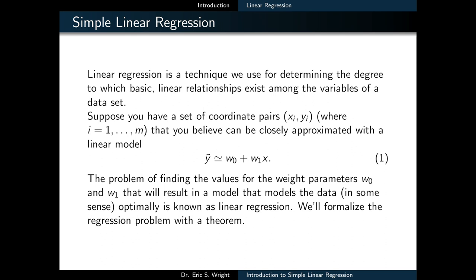Suppose you have a set of m-coordinate pairs, x sub i and y sub i, that you believe to be closely approximated with a linear model. In this model, x represents the input variable, y represents the output predicted variable, and w0 and w1 are the bias and weight parameters that we use to fit the model to our data.